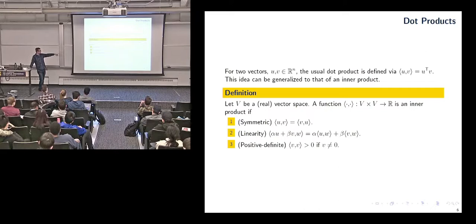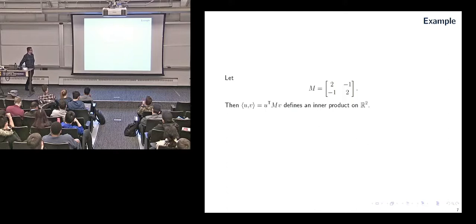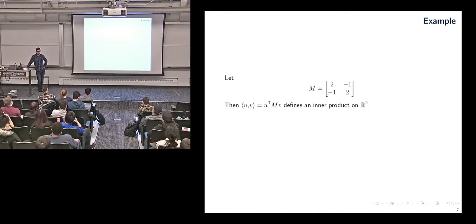Anything following these three rules is called an inner product. We know that U-transpose V follows these rules, but we can cook up more exciting dot products. The question is: if we just require these three rules, how much more exciting can our dot products get? The answer is we can get more exciting, but not too terribly much so.